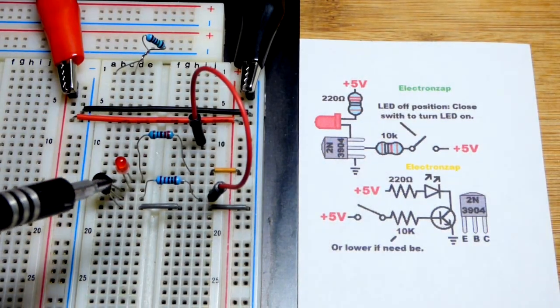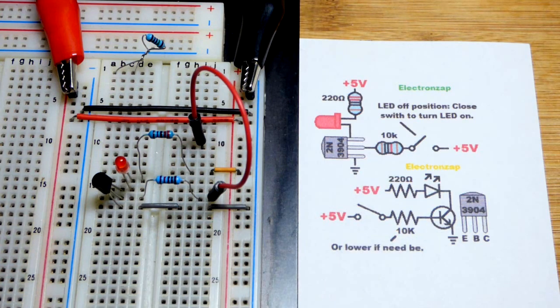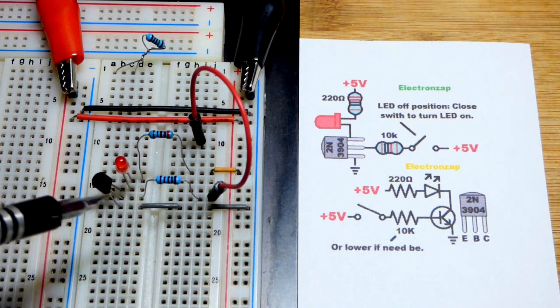So now in this video we're going to look at the NPN bipolar junction transistor, the 2N3904 in particular. We'll look at that in more detail coming up.